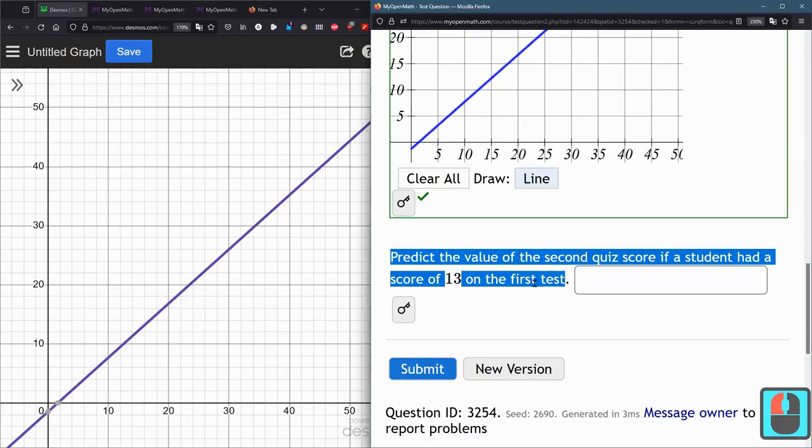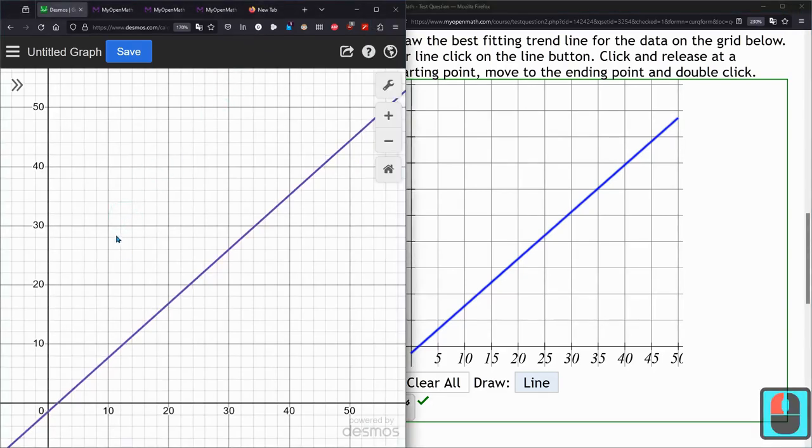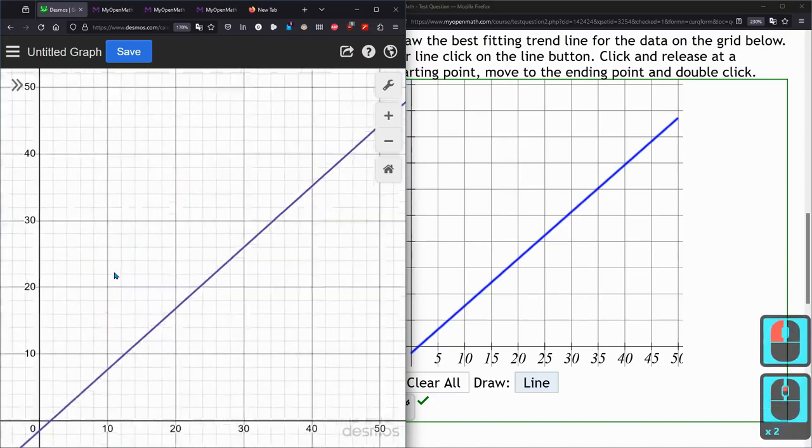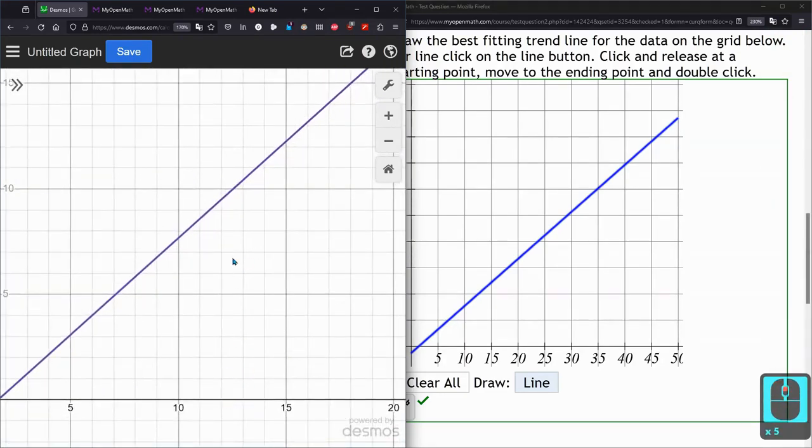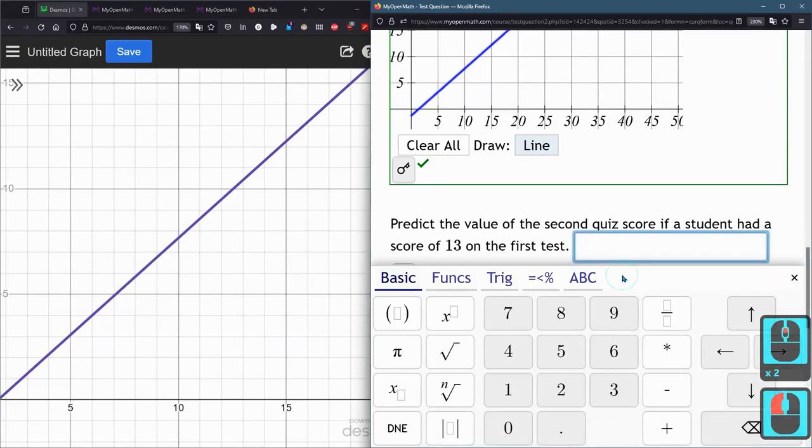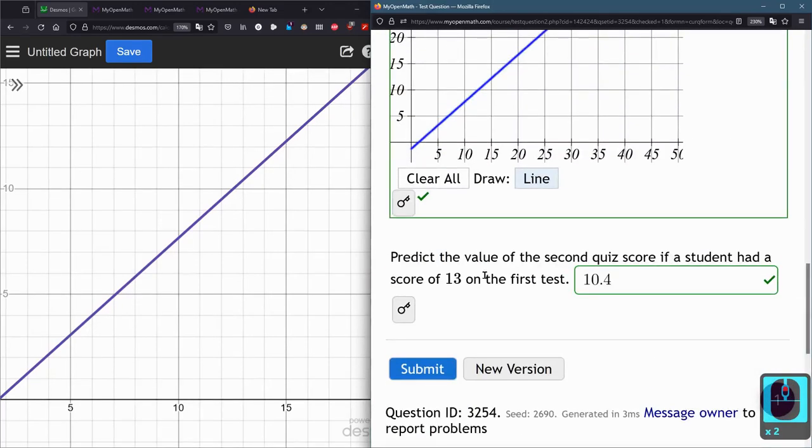So if you need more precision use Desmos to get this line more accurate. All right last one, predict the value if a student had a score of 13 on the first test. So once you have this right here I don't want to click, it's dangerous, so actually I'm going to use Desmos. Just think where 13 would be, between 10 and 15, a little closer to 15. But I can actually use Desmos here. I have this, this is not an approximate line of Desmos, this is the actual line here. So I'm going to zoom in, use the scroll wheel to zoom in, and then you left click and drag to move it. I'm looking for 13 and I can click right here. So 13 and 10.4.